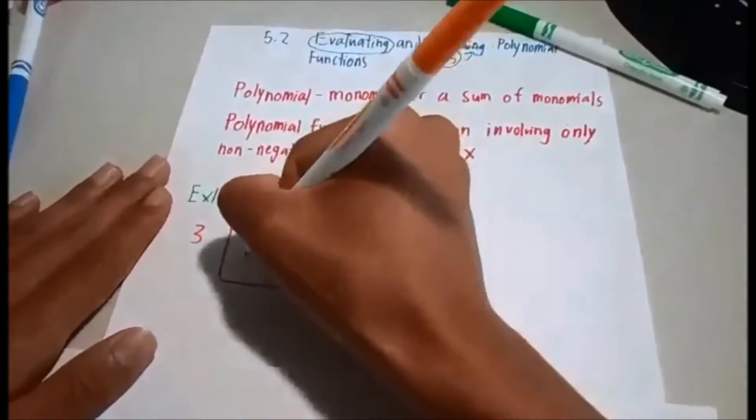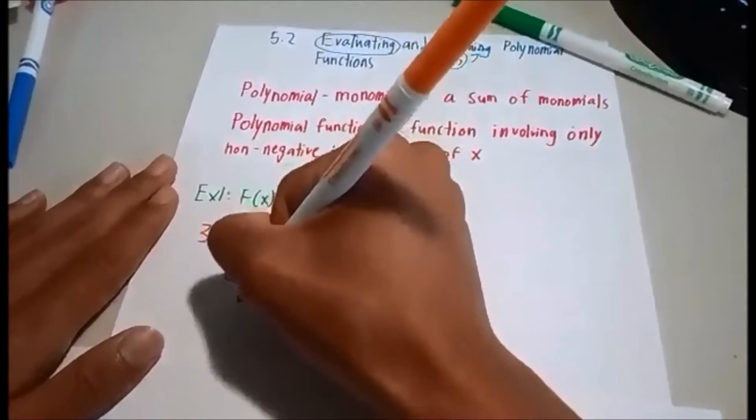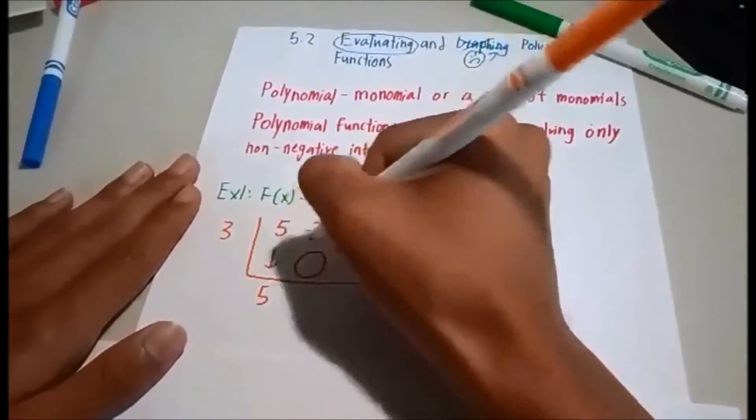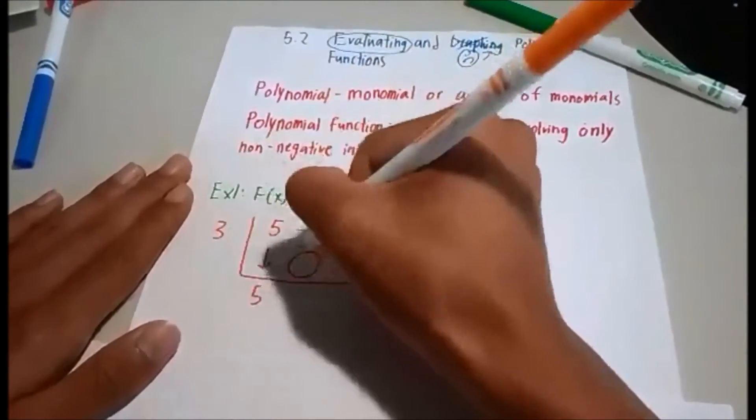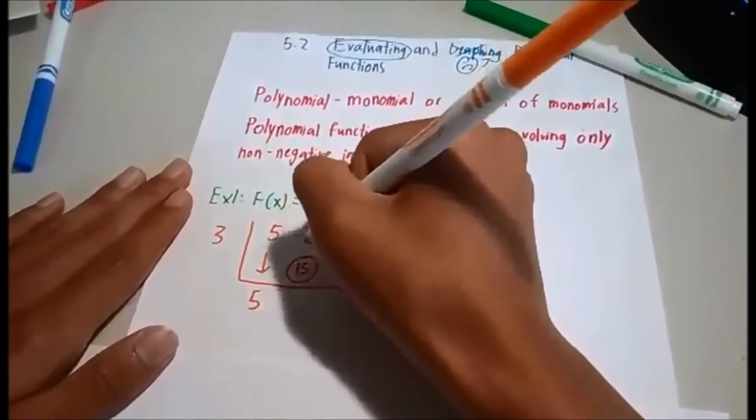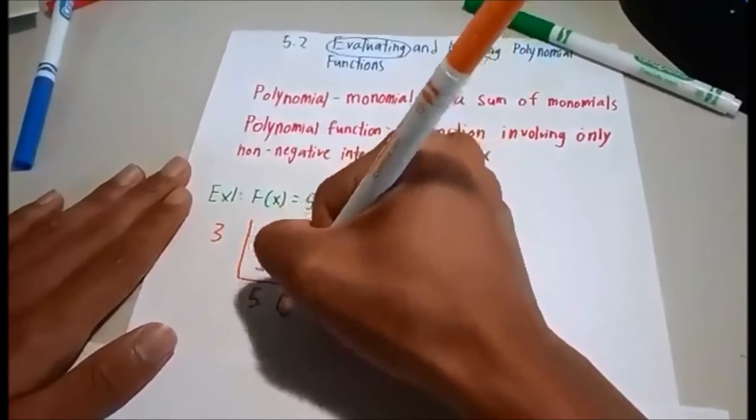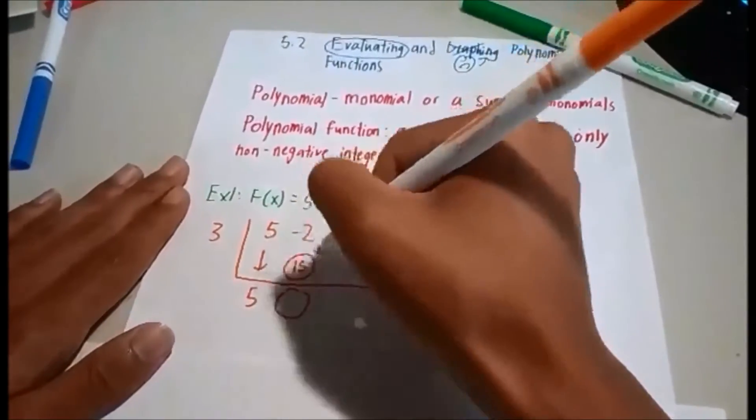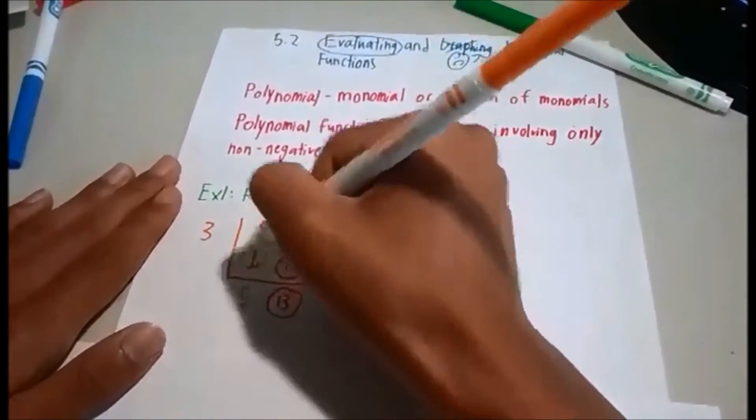To do this problem, we will first drop the 5. And to get this term here, we will be multiplying 3 with 5. So that will give us 15. And to get this term over here, we need to add negative 2 to 15. And with that, we will get a sum of 13.